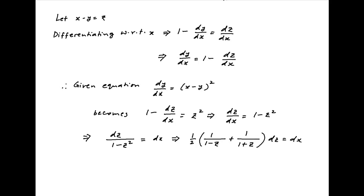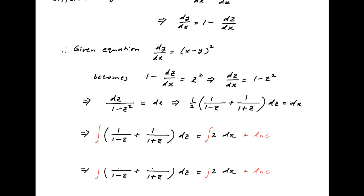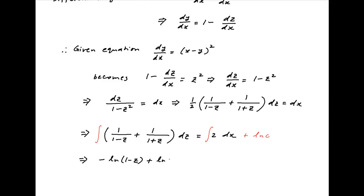Multiplying both sides by 2, we get [1 upon (1 minus z) plus 1 upon (1 plus z)] dz is equal to 2 dx. Now integrating both sides and introducing a constant of integration ln c on the right-hand side, we get minus ln|1 minus z| plus ln|1 plus z|, which is equal to ln[(1 plus z)/(1 minus z)] is equal to 2x plus ln c.